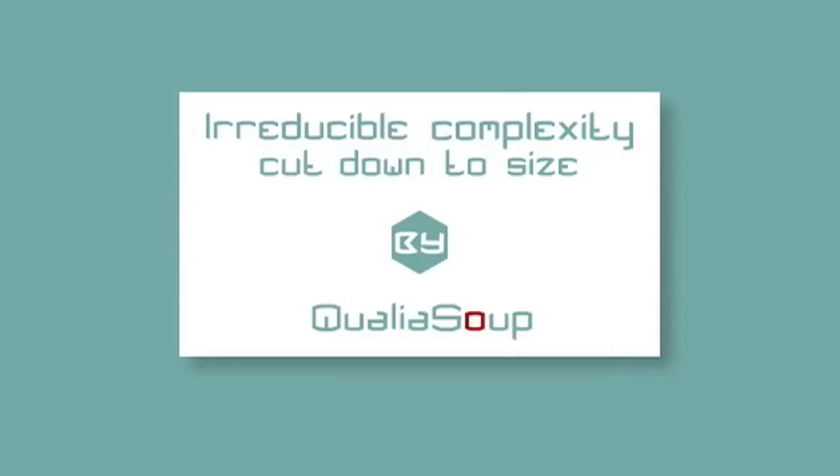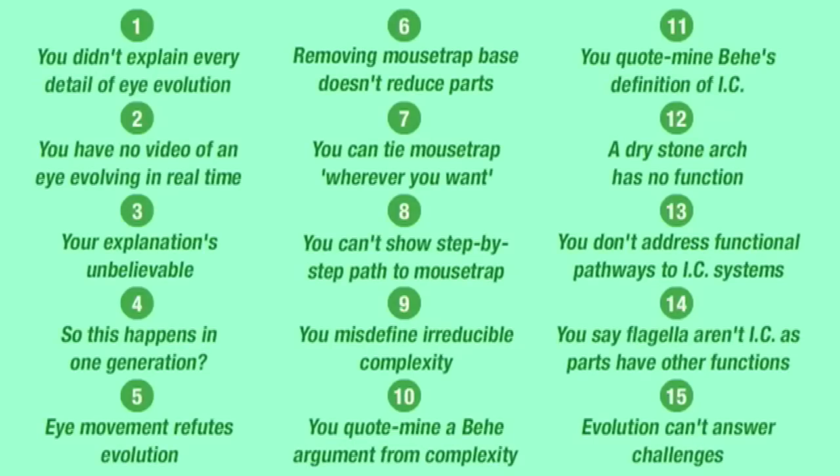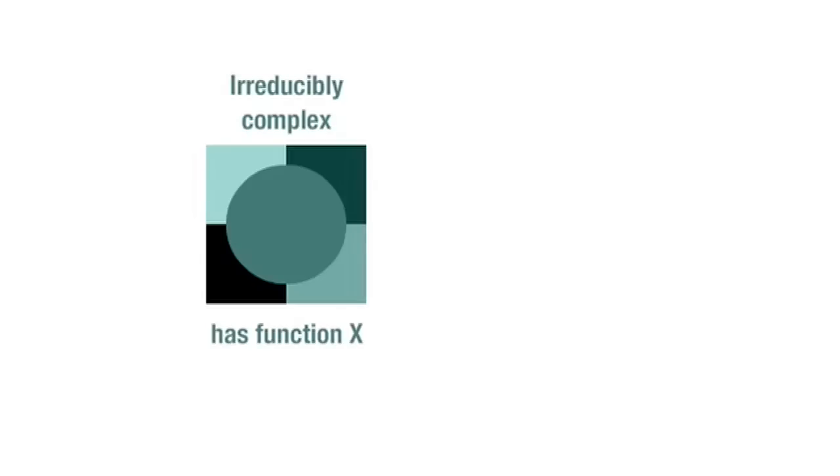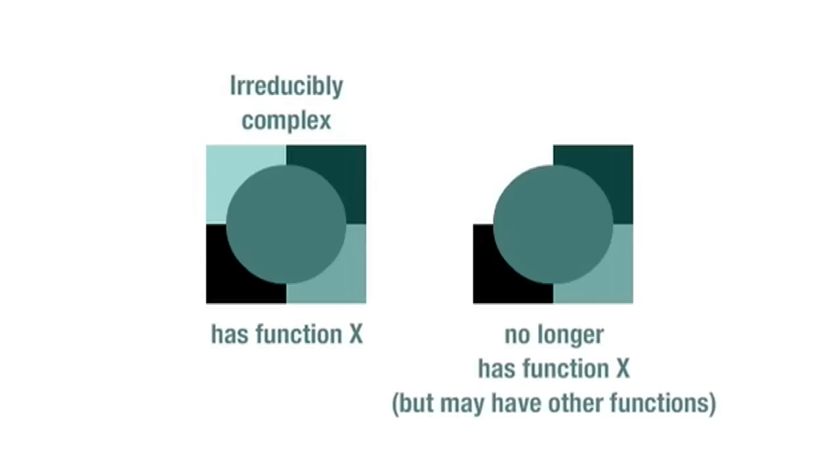My recent video on irreducible complexity received a predictable spread of strawman misrepresentations and other fallacious comments. This video builds on the previous one and deconstructs that bogus criticism. An irreducibly complex system is one which, when a part is removed, loses the specific function of that system.